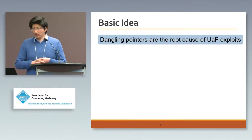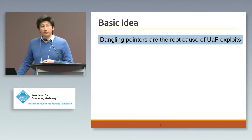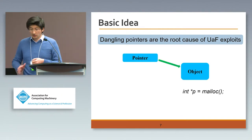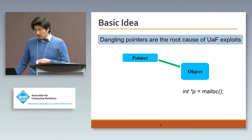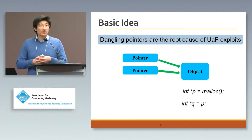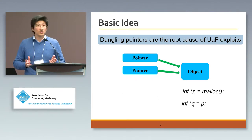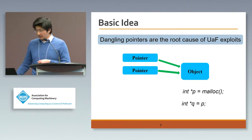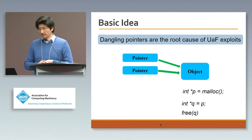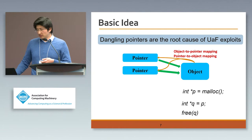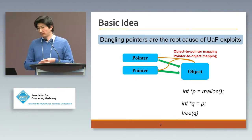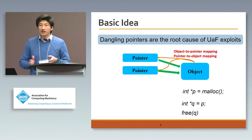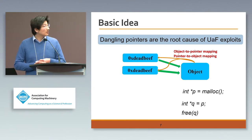The general idea of pointer sweeping-based UAF defense looks like this. Here is a simple C code example where a pointer P points to just-allocated memory. As the program continues to run, this pointer may be further propagated to some other pointers — now there are two pointers pointing to an object. At some point the program may choose to free this object. The idea of pointer sweeping says: instead of just having a pointer-to-object relationship, can we have an extra reverse mapping? If the object knows how many pointers point to it, by the time you do free, you can mark those pointers as dead-beef (dangling).